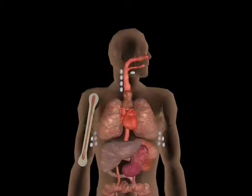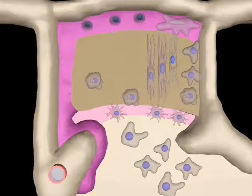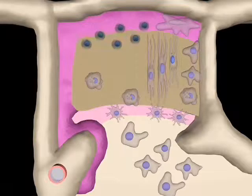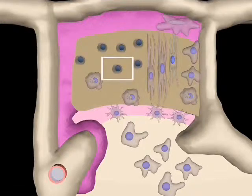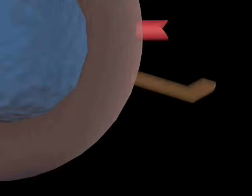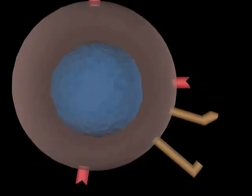Within the thymus, pre-T-cells migrate to the subcapsular region. These cells then divide rapidly and pass into the cortex. At this time, each will produce its particular diversified T-cell receptor. This pre-T-cell must also generate two other receptors, CD8 and CD4.